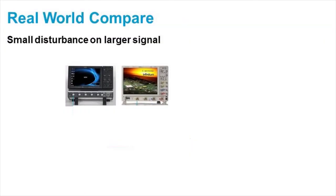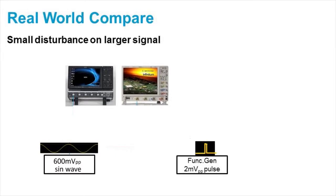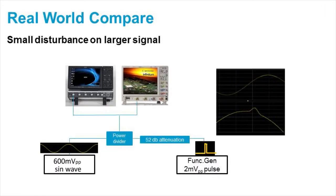So let's look at a real-world comparison. I have a setup where I've input a 600 millivolt peak-to-peak sine wave from an Agilent MXG that has very low noise on it. And superimposed on that waveform, I have a very tiny 2 millivolt pulse that happens each time at the peak of the sine wave. Let's see what it looks like on both the LaCroix 12-bit scope and the Agilent 9000 series scope in 12-bit mode.